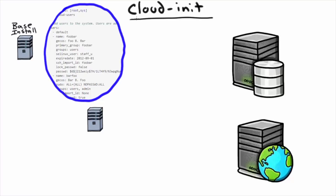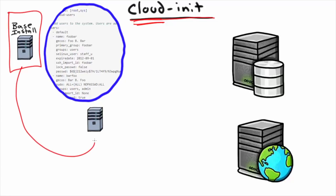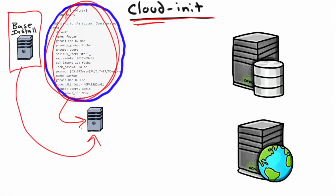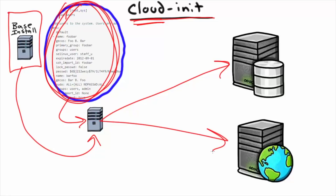Now what we generally use is something called cloud-init, a post-install customization utility. It's very common in the cloud, but it doesn't have to be strictly cloud-based. We take a fully installed virtual machine, clone it to get an exact copy, then inject settings using cloud-init code. During this process we add users, network information, and applications — turning it into whatever kind of server we need. There's no operating system installation at all; it's cloned from an already-installed machine. It's much more efficient, much faster, and more elegant — we just take a base clone and customize it into whatever we want.